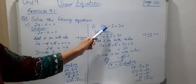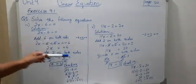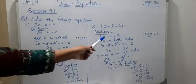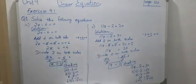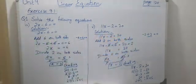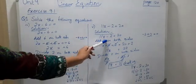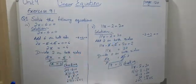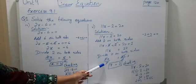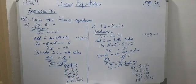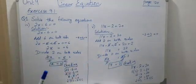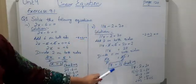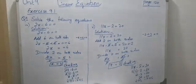One more example: 11x minus 2 equals 20. First remove minus 2 — add 2 on both sides: 11x minus 2 plus 2 equals 20 plus 2, giving 11x equals 22. Divide both sides by 11: x equals 22 divided by 11, so x equals 2. Verify: 11 times 2 minus 2 equals 22 minus 2 equals 20. Correct!